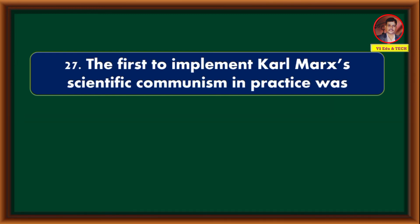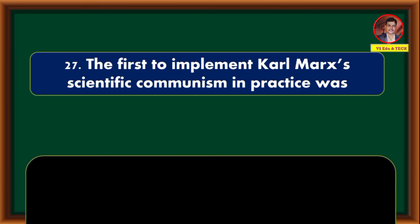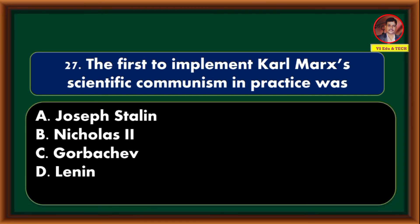The first to implement Karl Marx's scientific communism in practice was — Joseph Stalin, Nicholas 2nd, Gorbachev, Lenin. Correct answer is option D: Lenin was the first to implement Karl Marx's scientific communism in practice.